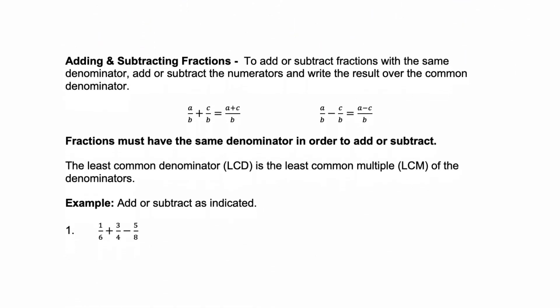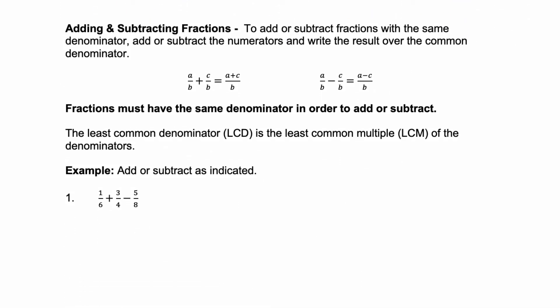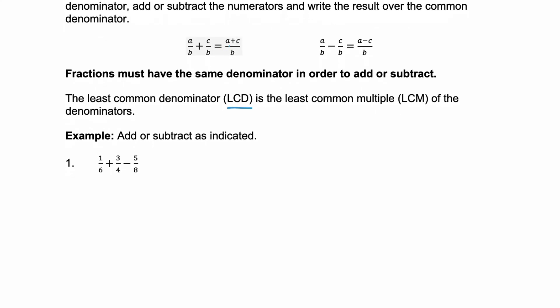Now let's look at adding and subtracting fractions. When you add and subtract fractions, the denominator has to be the same number. If it's not the same, you have to get a common denominator before you can add or subtract. That common denominator is called the LCD, or the least common denominator. Once you have that common denominator, you add or subtract the numerators. Notice that the denominator doesn't change — it stays the same. That's why it has to be a common denominator.